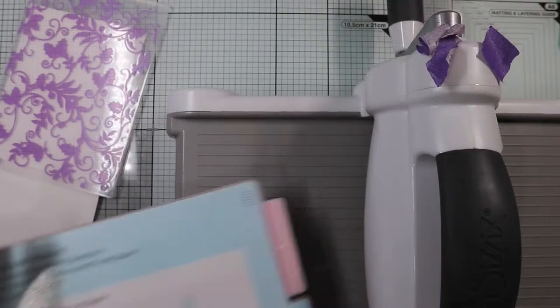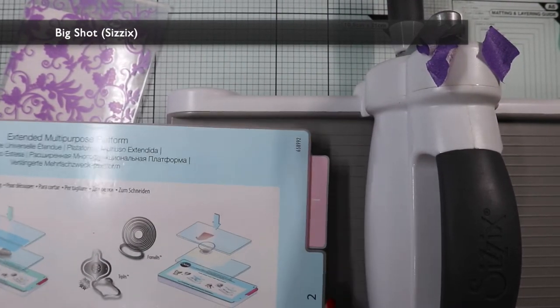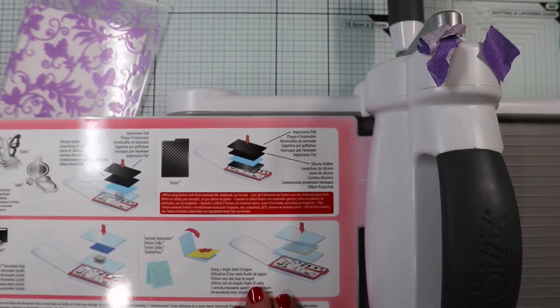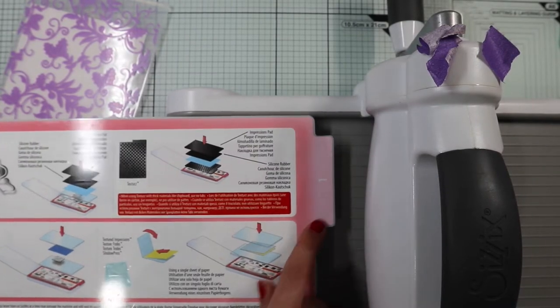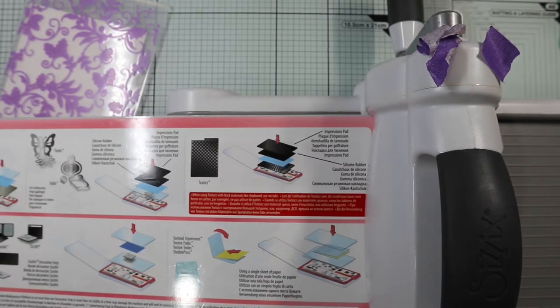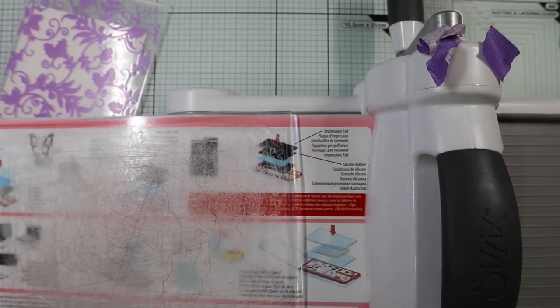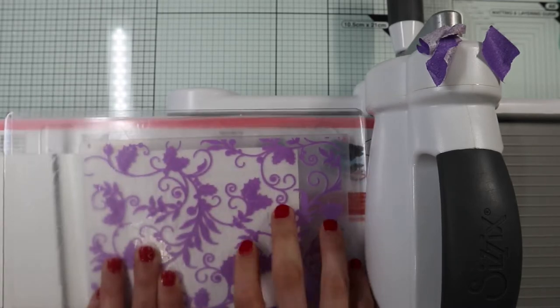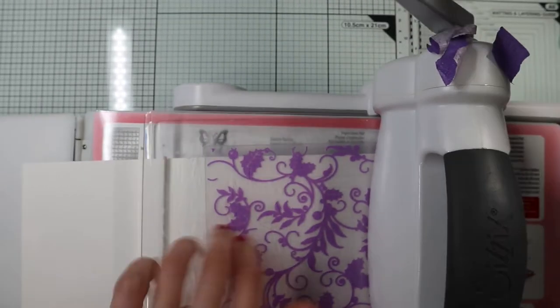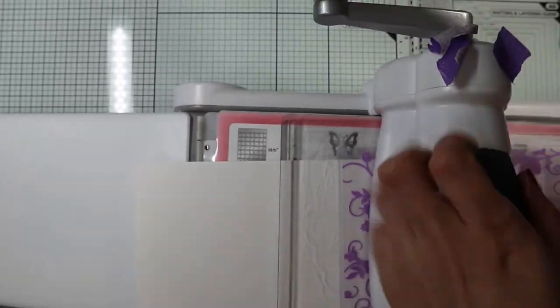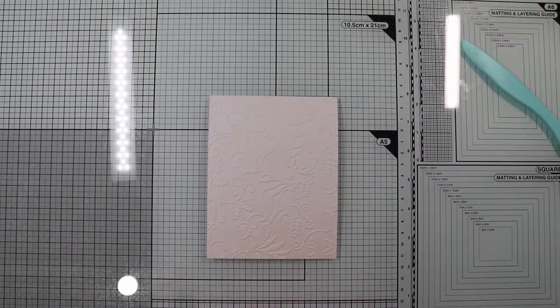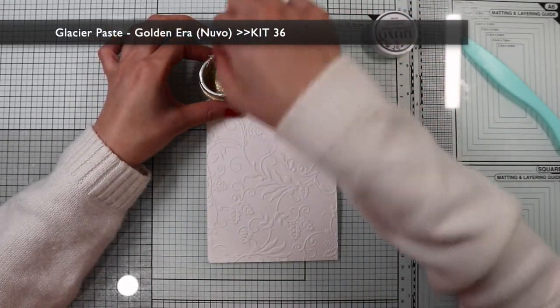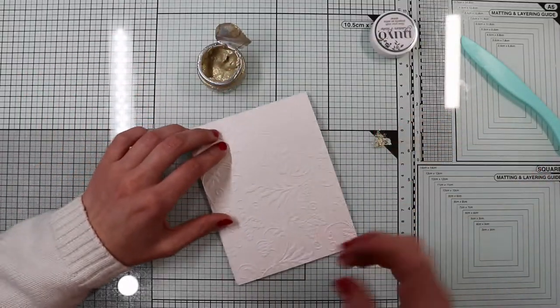Now you should follow the instructions of your die-cutting machine on how to use an embossing folder. In my case I have to use layer number one of the C6 platform. Then I'm going to compose the sandwich: first acrylic plate, embossing folder with paper inside, and acrylic plate. We can also add a touch of shine with the golden glazier paste, staining the embossed part just with your finger.